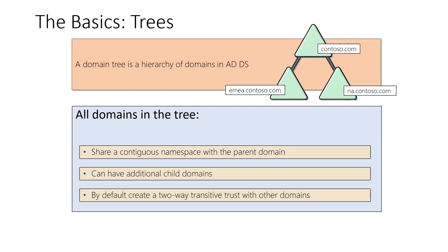Next comes the trees. A domain tree is a hierarchy of domains in Active Directory Domain Services. All the domains in the tree share a contiguous namespace with the parent domain, can have additional child domains, and by default create a two-way transitive trust with other domains.